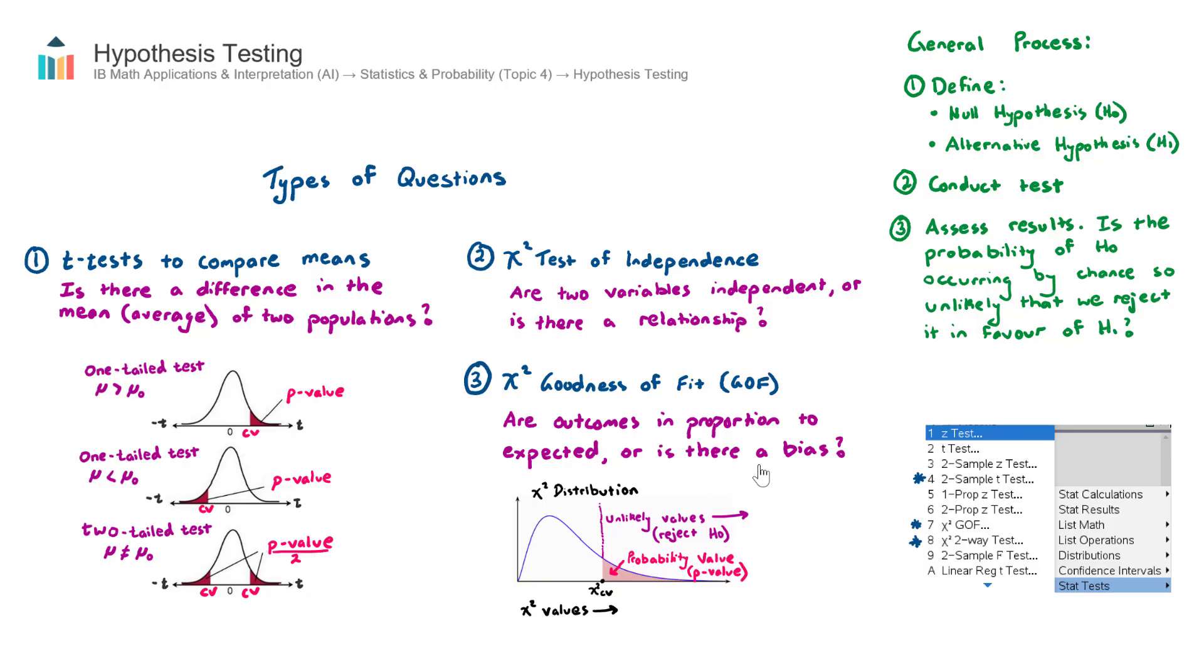Now, the example that I like to use here is, let's say we flip a coin a hundred times, we would expect there to be 50 heads and 50 tails. But what if the actual results were more like 55 heads and 45 tails? We need to determine that difference from the expected. Did that occur by chance? Or is there actually a bias in this coin that we're flipping? That's what this third part is all about.